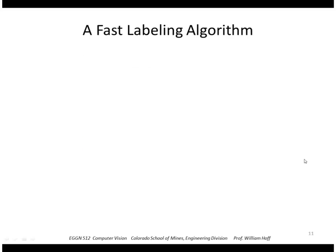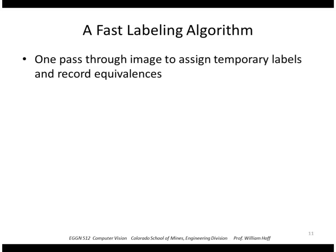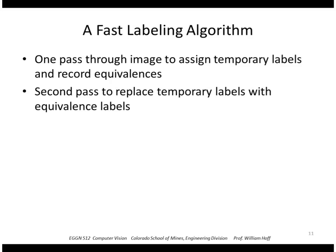So this algorithm is actually very fast to implement in a computer. It just takes one pass through the image to assign temporary labels and record equivalences. An equivalence set is a set of elements that are considered to be all the same. Those are going to be the temporary labels that actually all belong to the same object. And then a second pass goes through and replaces those temporary labels with equivalence labels.